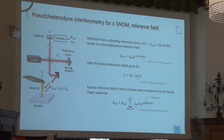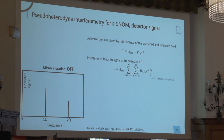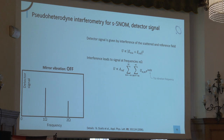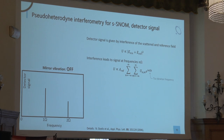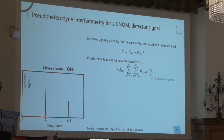We have the reference field and the scattered field. Both fields interfere at the detector: the scattered field adds up with the reference field, and we square it because photodetectors detect intensity. If I first switch the mirror vibration off, this is a schematic of our detector signal. We see the harmonics appearing. We describe it, as Rainer did before, as one sum, with Fourier coefficients of our detector signal.